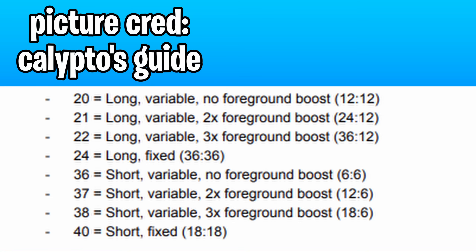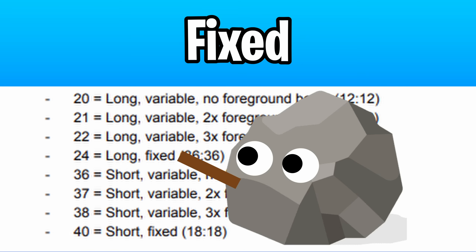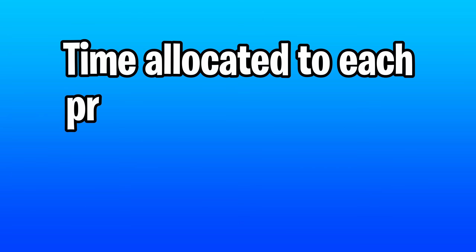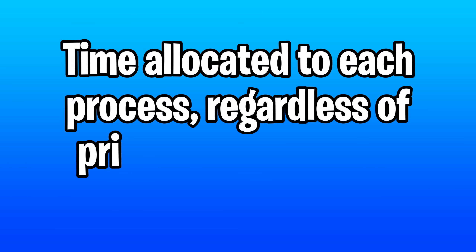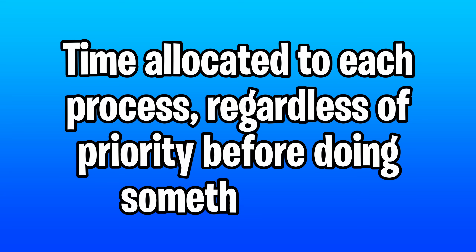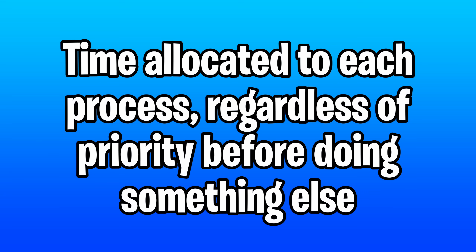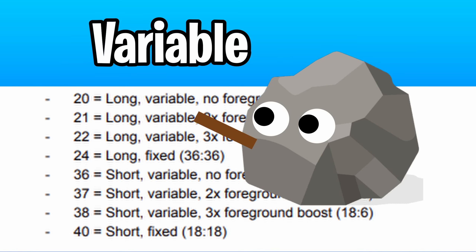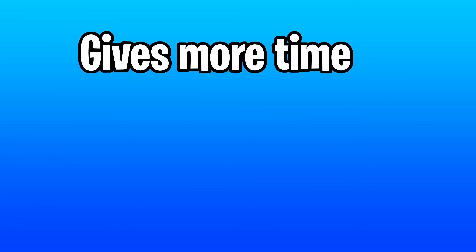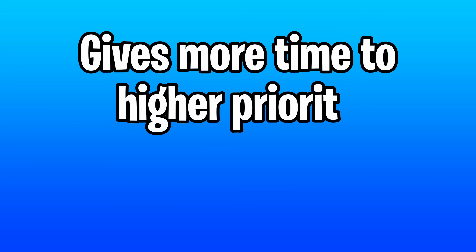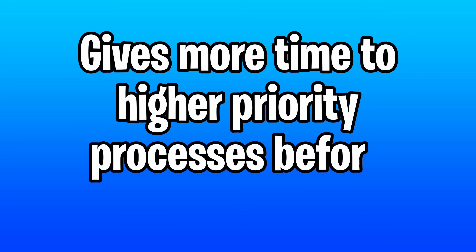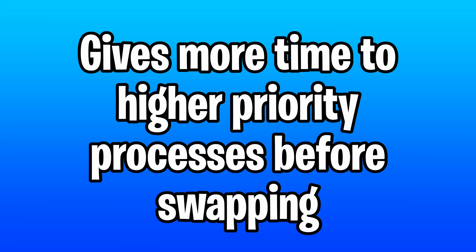We have a lot of values here that we'll be trying out today. Let me explain what we're looking at first. Term number one: Fixed — this refers to a constant time slice that is allocated to each process for execution. Regardless of the process's priority or other factors, it gets the same amount of CPU time before the scheduler switches to another process. Variable — the time slice allocated to a process varies based on its priority level. Processes with higher priority levels get longer time slices, allowing them to execute more instructions before being preempted by lower priority processes.